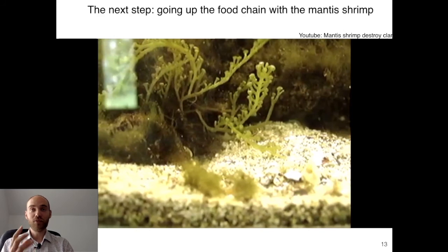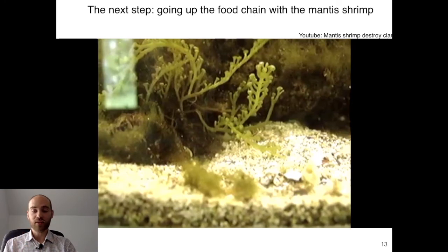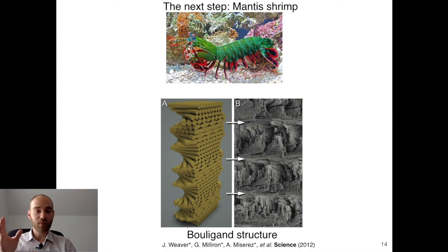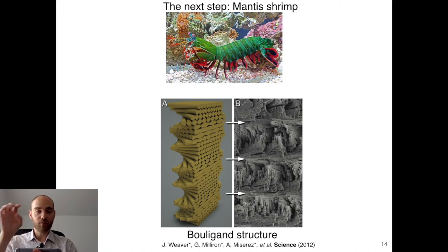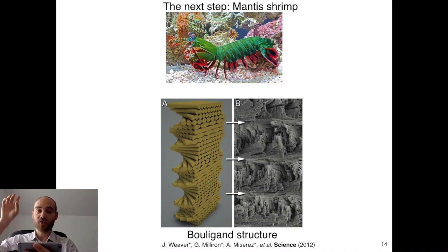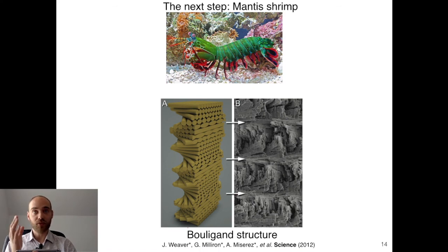The hammer of the mantis shrimp is made of almost the same material as nacre, but with a different arrangement — a very complex helicoidal structure called the Bouligand structure. What I want you to remember is that you can use processing and microstructure control to change properties and remove intrinsic defects. That's what material science is: influencing the process to change the microstructure and the properties, making for far more performant materials — illustrated both in the natural world and in industrial applications.